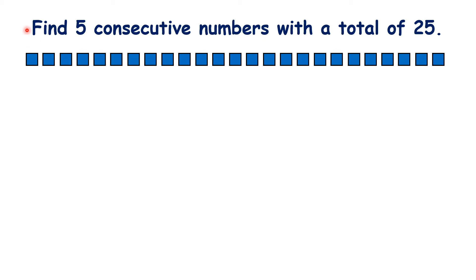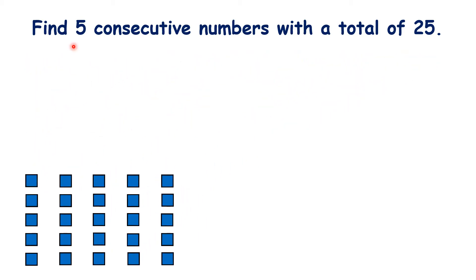Now this question is a little different. How can we adapt our method? We have 25 blocks here. Rather than dividing them into three groups like we did last time, let's divide them into five groups because we need to find five consecutive numbers.